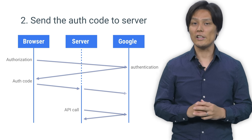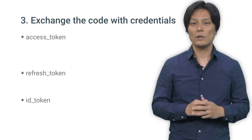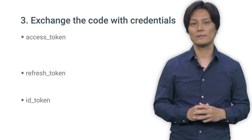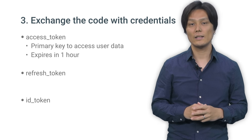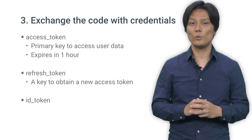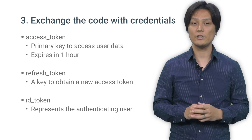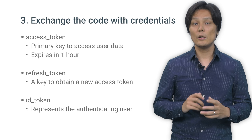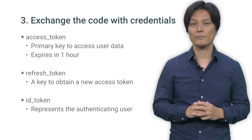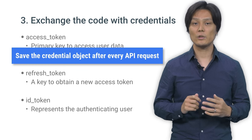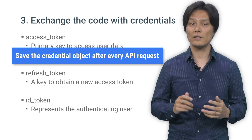On the server side, use the client library to exchange the auth code with the credential object, which includes access token, refresh token, and ID token. The access token is a primary key to access the user data through Google APIs. The refresh token is a key to renew the access token. An ID token represents the authenticated user, as I mentioned in a previous video. Remember that the client libraries take care of refreshing the access token if it has expired. For this reason, you should store the credential object in your database after each request. This ensures you always have the latest credential object.